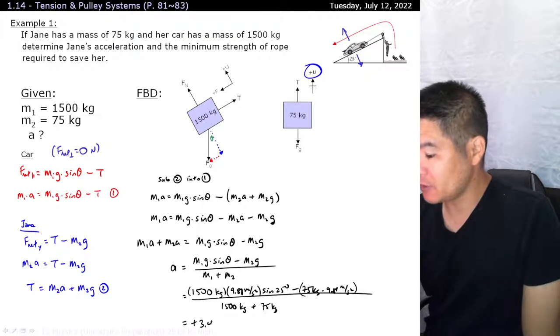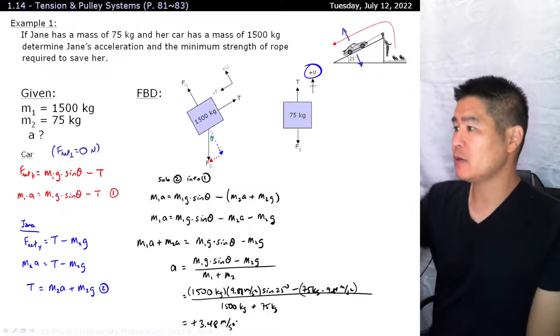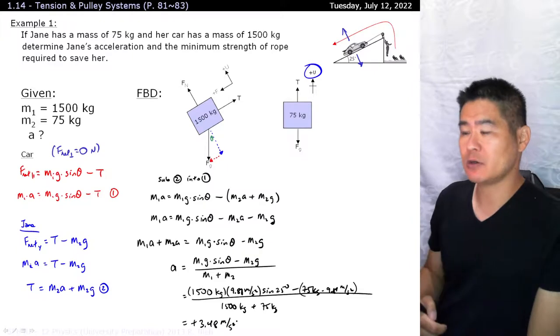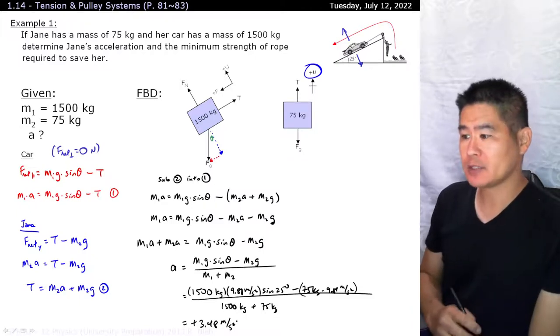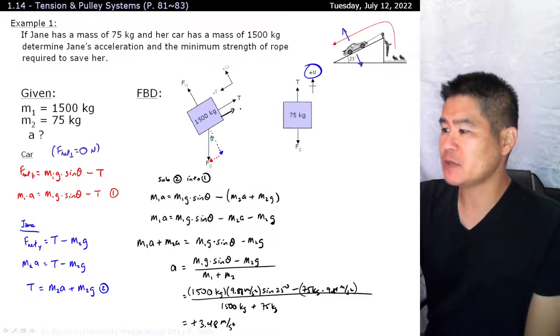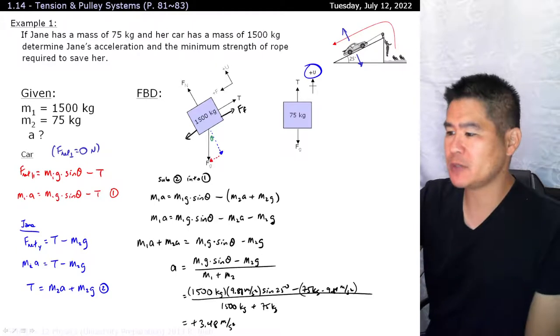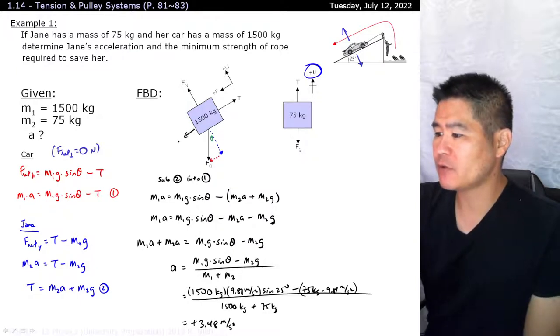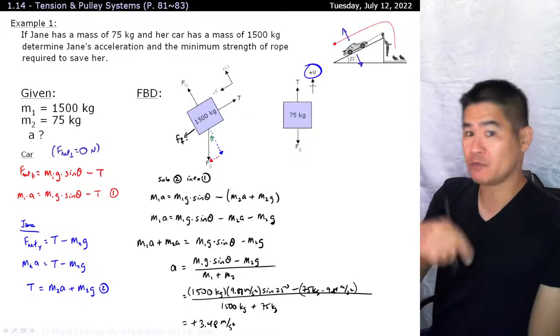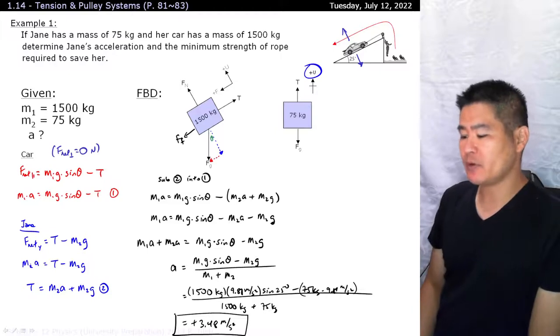And I get 3.48 meters per second squared. I just want to emphasize that this is positive 3.48 meters per second squared, just to tell you that our assumptions are correct that the acceleration actually does go down the hill. Because if you got a negative answer, you probably could have just left it. But if friction was involved and you made an assumption that friction went the opposite way than intended, then you need to reset again and recalculate everything all over again.